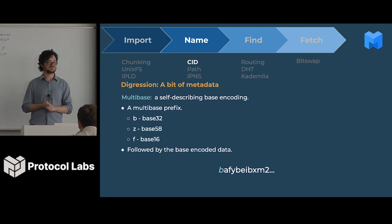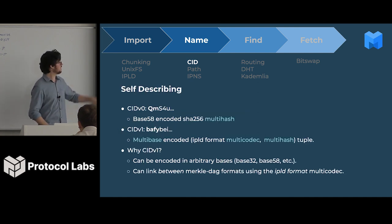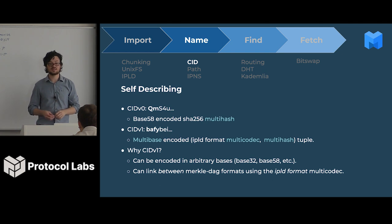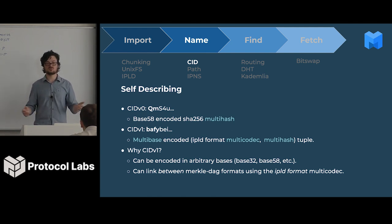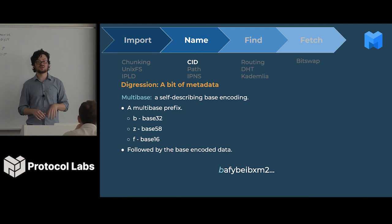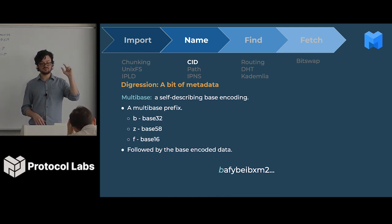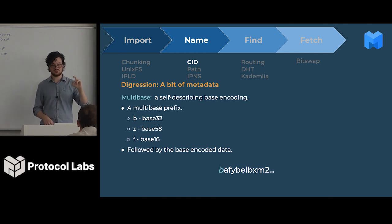Finally, multibase. If you look at CIDv0, it always starts with 'Qm' something and has capitals and lowercase characters, which doesn't play well with browsers. In certain contexts we only need one base encoding; in others, another — but we need to be able to tell which base encoding we're using. This is where multibase came in. Like multihash, we use a prefix to tell you what type of base encoding is used. If you see a 'B' up front, it's encoded using base 32. A 'Z' means base 58. An 'F' means base 16. These are self-describing base-encoded strings.